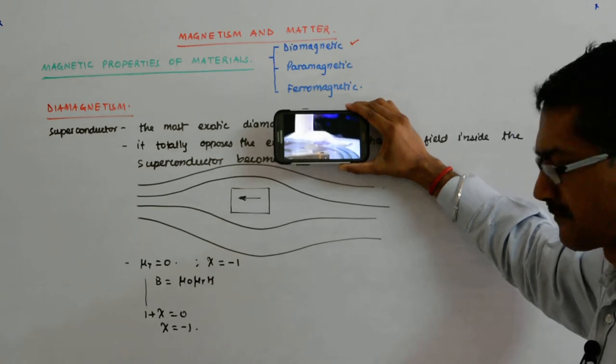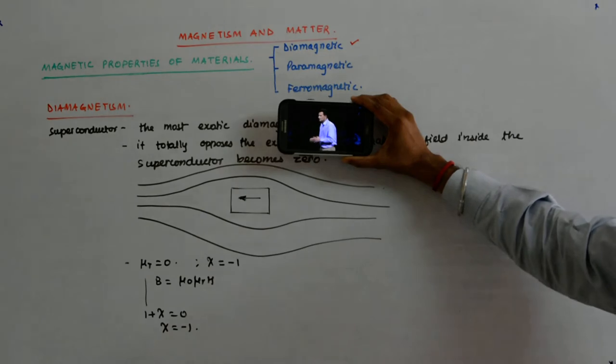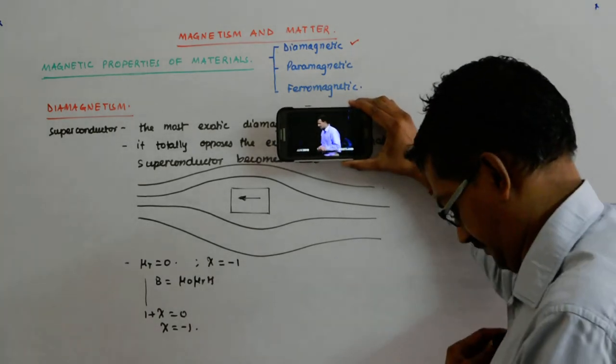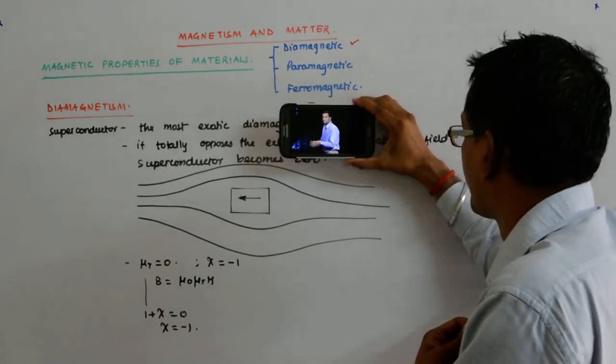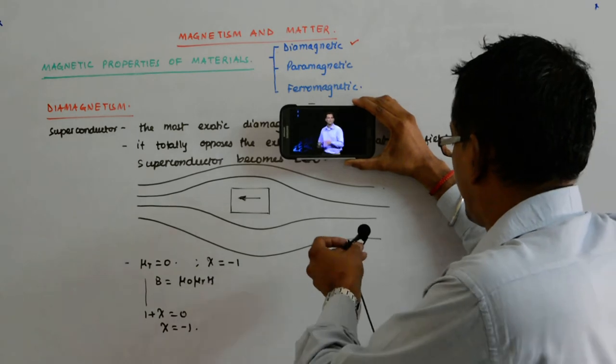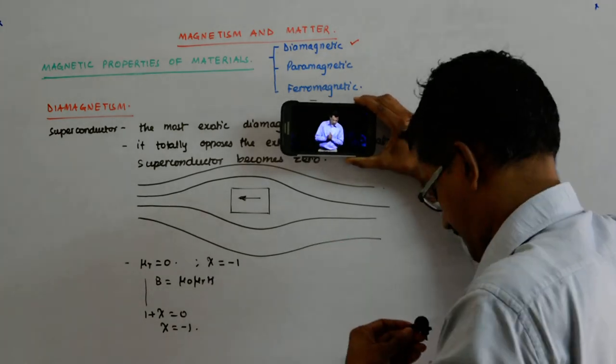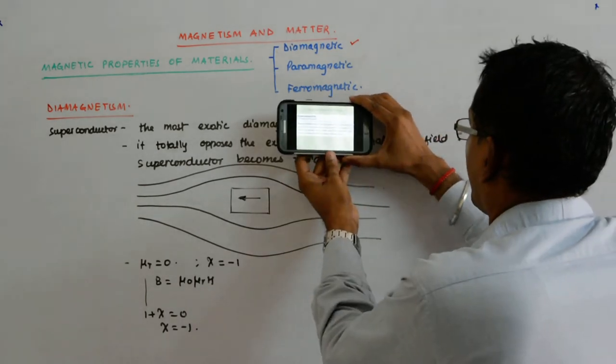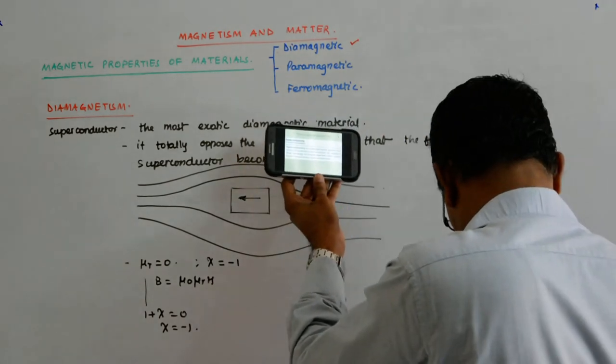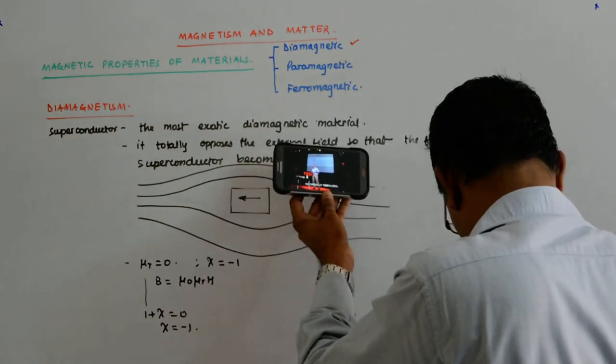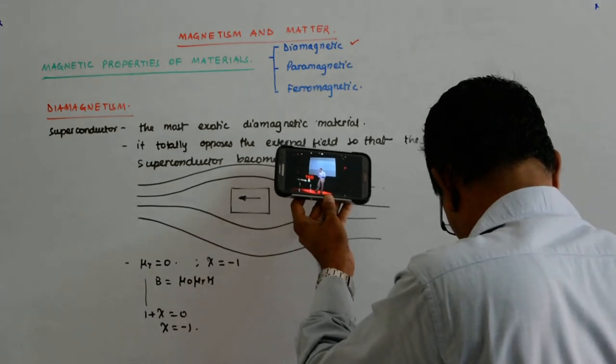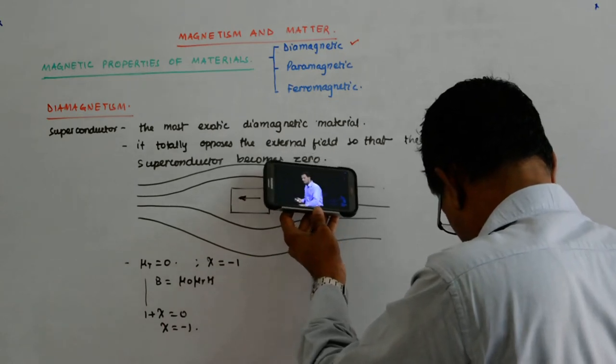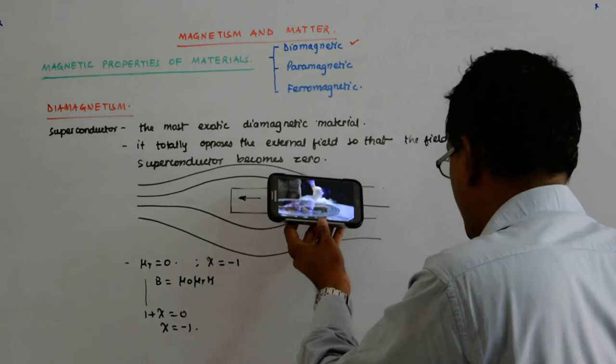The phenomenon we saw here for a brief moment is called quantum levitation and quantum locking. And the object that was levitating here is called a superconductor. Superconductivity is a quantum state of matter and it occurs only below a certain critical temperature.